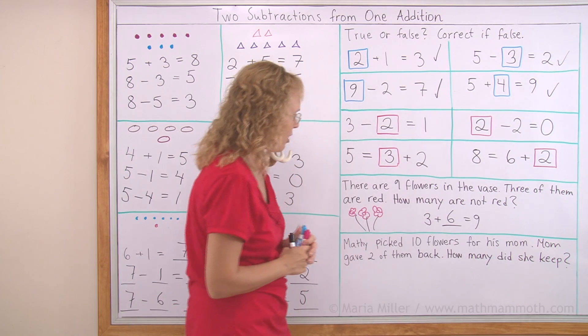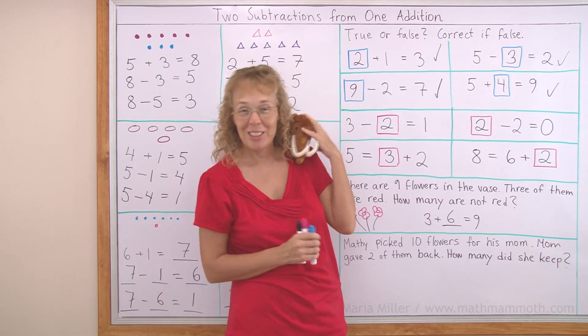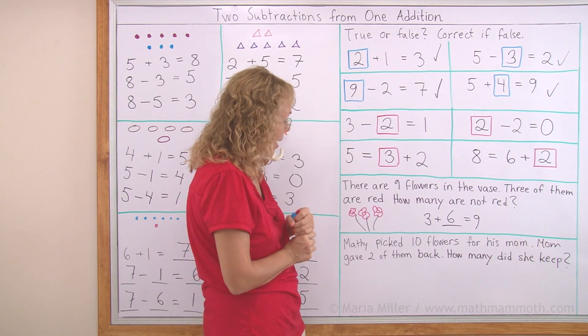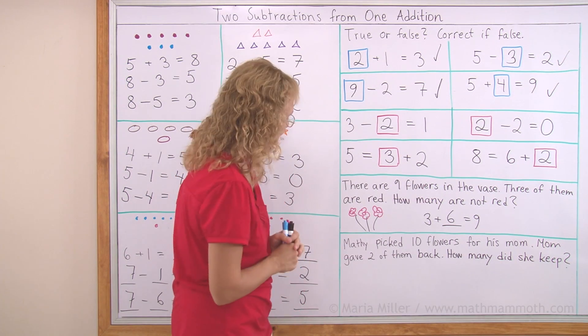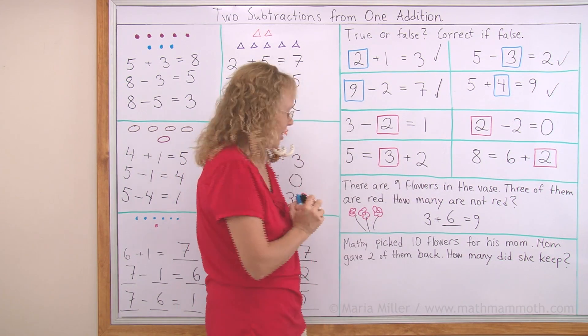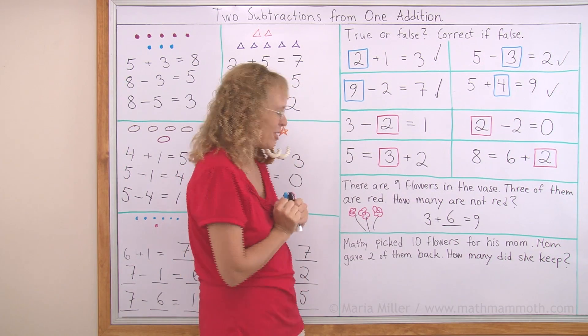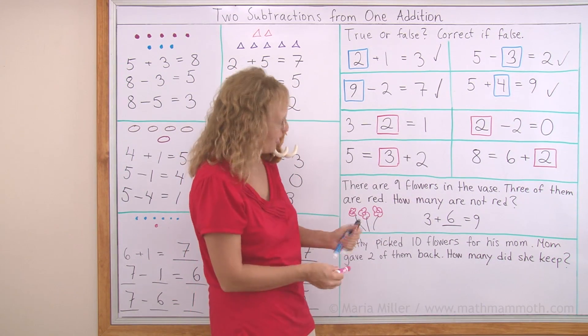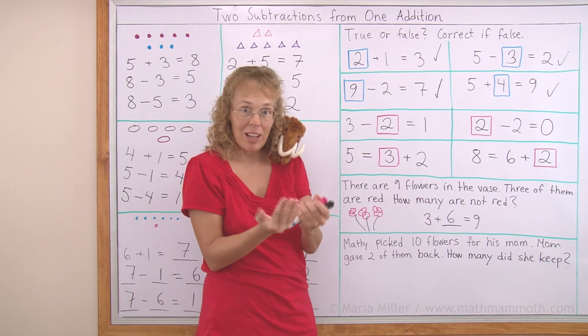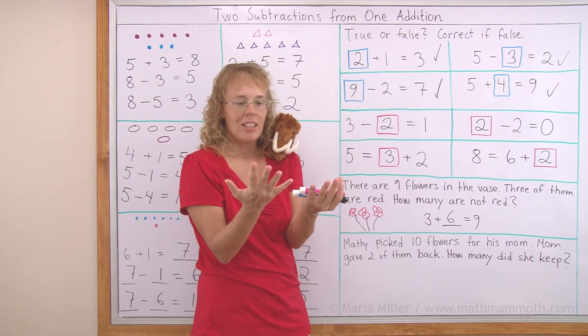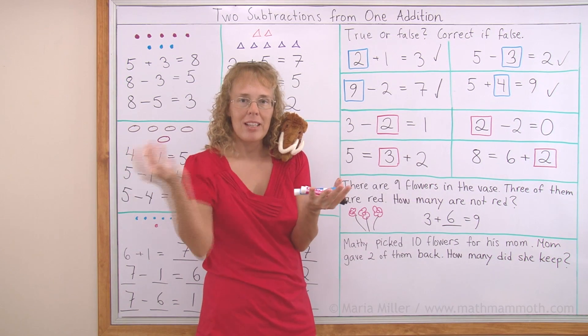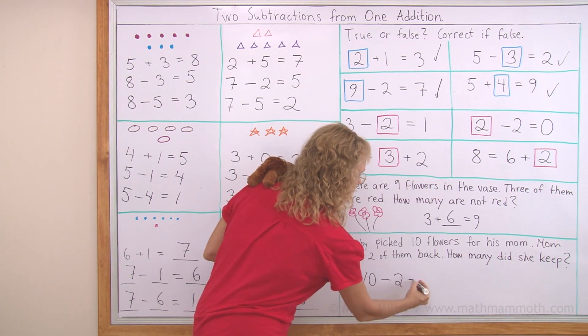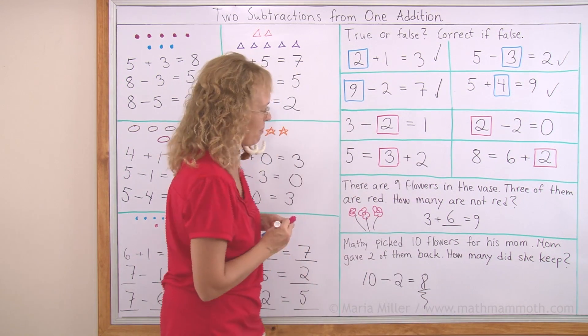Now Matthew picked ten flowers for his mom. That's so very nice. I hope my kids would pick me flowers. Matthew picked ten flowers for his mom. Mom gave two of them back. How many did she keep? Okay, you could even play this out. Give your mom ten flowers. Mom gives two of them back. And then how many does mom have? Or you could draw ten flowers because mom has ten flowers. Or you could use your fingers for the ten flowers. Like, I have ten flowers here. I give two of them back. So how many will I have left? You can write a subtraction. Ten take away two equals eight. Mom has eight flowers left. Good job.